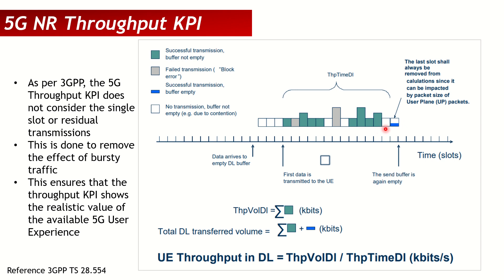As an example, if a user was watching YouTube and all the video is downloaded, the last bits are transmitted in the last slot — that blue slot is not included per 3GPP in the 5G user throughput formula. UE throughput in downlink is calculated as throughput volume DL divided by throughput time DL. The green boxes form the throughput volume DL; retransmissions and the last slot are excluded from both numerator and denominator.